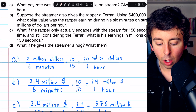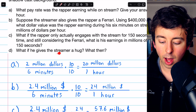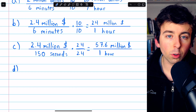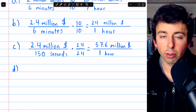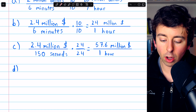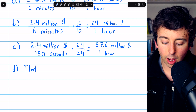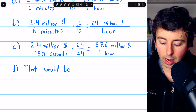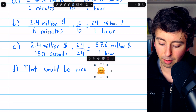On to Part D: what if the rapper gives the streamer a hug? This is an interesting problem because a hug doesn't actually change the pay rate. The pay rate, if we're still in the circumstances of Part C, is $57.6 million per hour. But if the rapper gives the streamer a hug also, all we can really say is — that would be nice. And we'll put a little nice emoji there too.